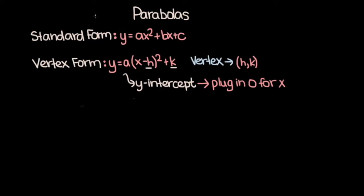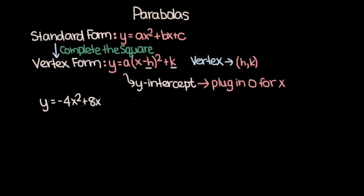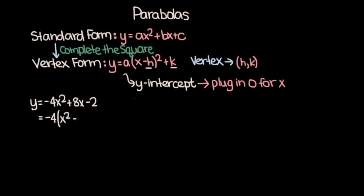If you want to convert a parabola from standard form to vertex form, you need to use the completing the square method. Let's do one example. Let's say we have the parabola y is equal to negative 4x squared plus 8x minus 2, and we want to convert it to vertex form. Let's start off by factoring out a negative 4 from the first two terms. If we do that, we have negative 4 times x squared minus 2x, then let's leave some room for another term, and then we have negative 2.